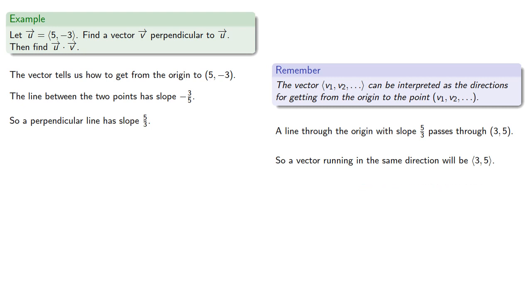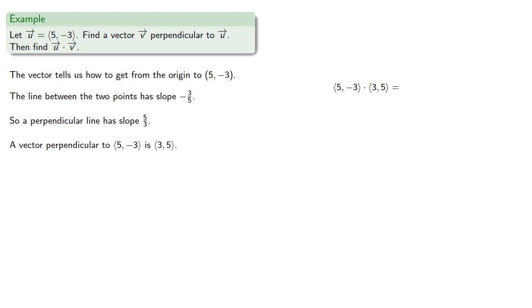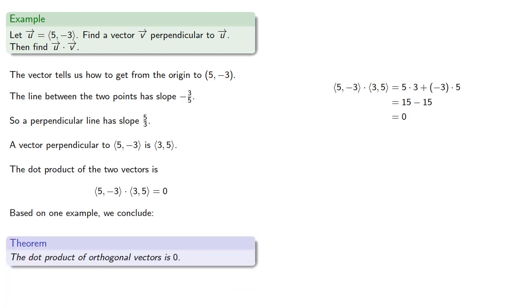And so we have our vector and a vector perpendicular. We'll find the dot product. And based on one example, we conclude: the dot product of orthogonal vectors is 0.